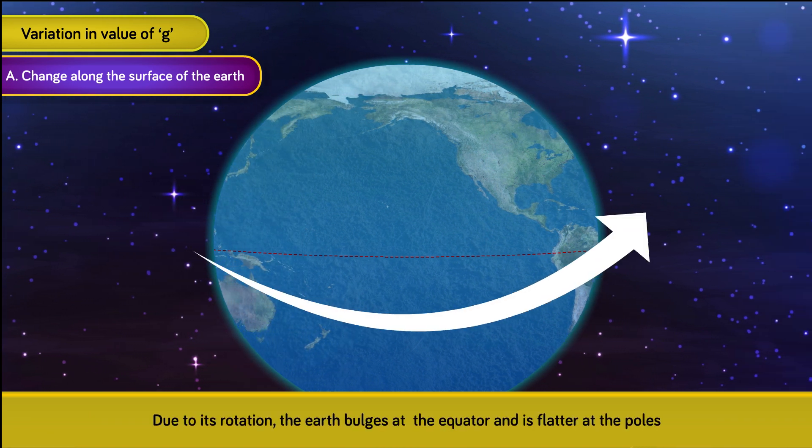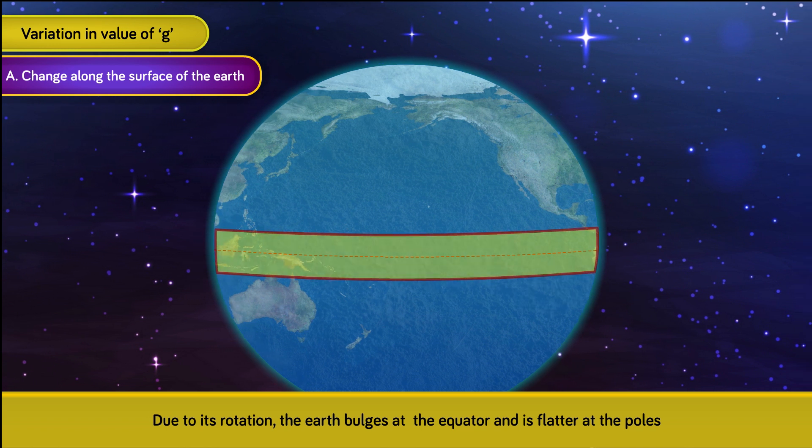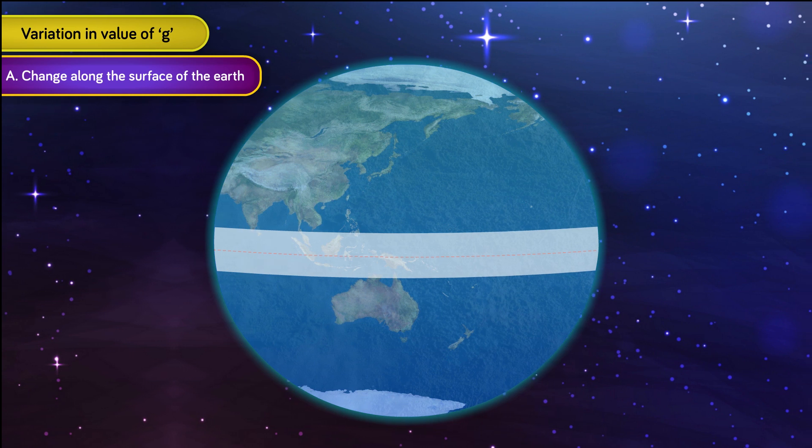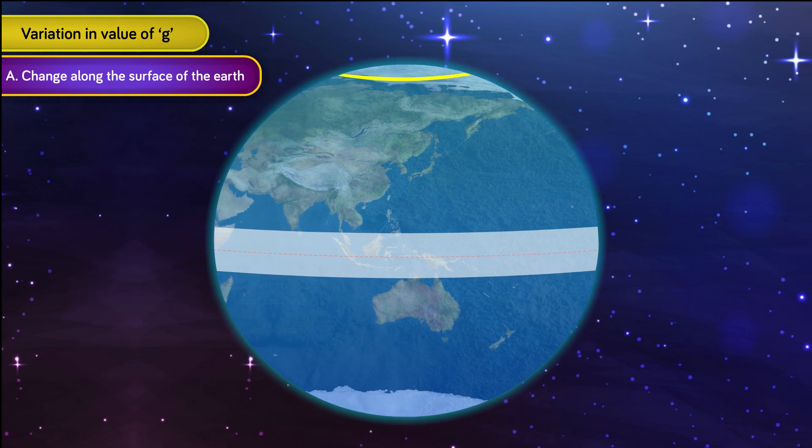Due to its rotation, the Earth bulges at the equator and is flatter at the poles. Its radius is largest at the equator and smallest at the poles.